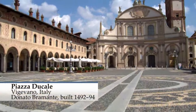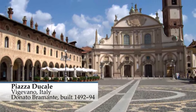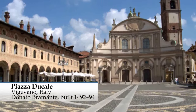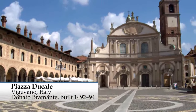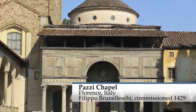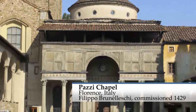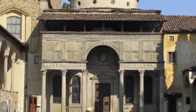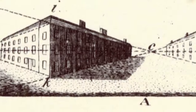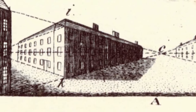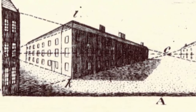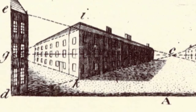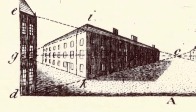Renaissance architects sought to achieve beauty through proportion, as classical architects had before them. This characteristic differentiates the Renaissance style from the Gothic. Interest in proportion also led to the pictorial device of perspective, first formulated by the Florentine architect Filippo Brunelleschi.